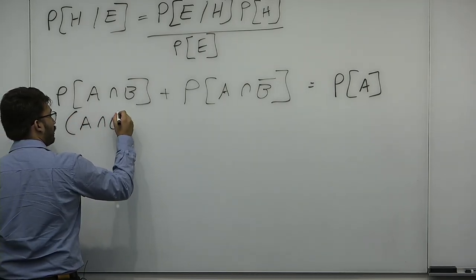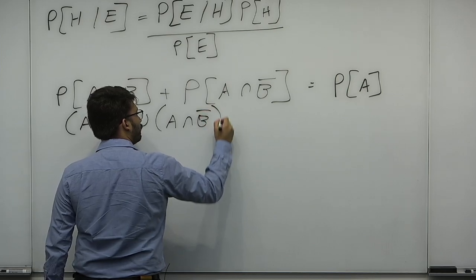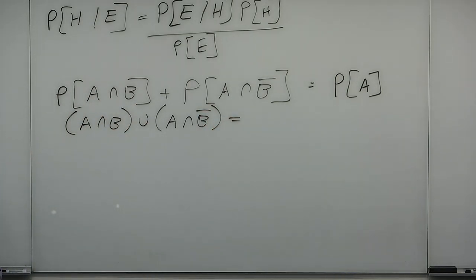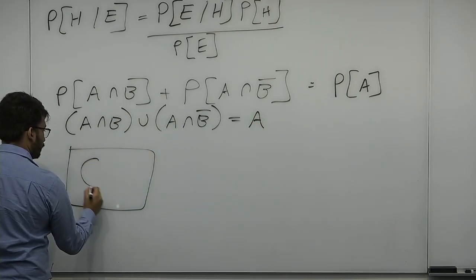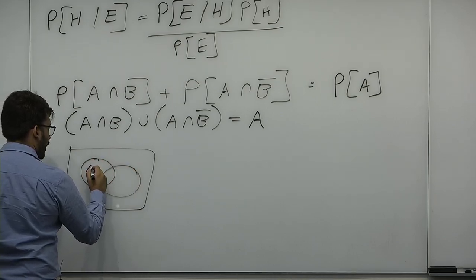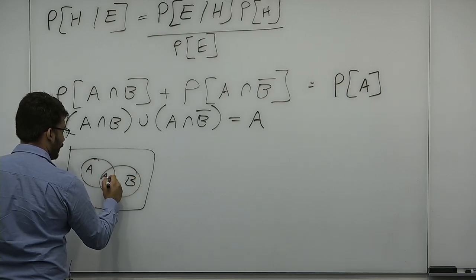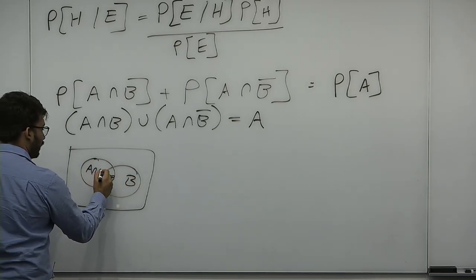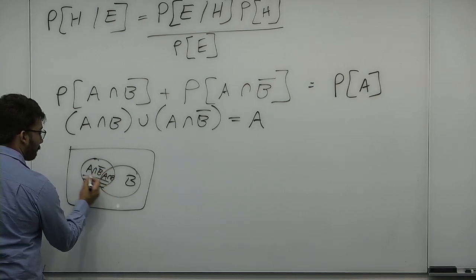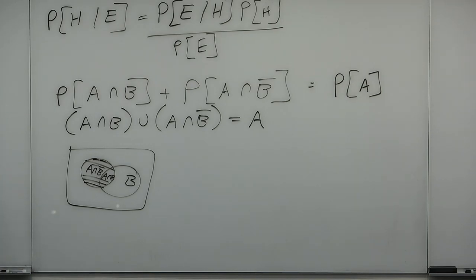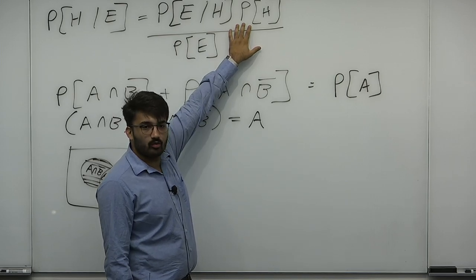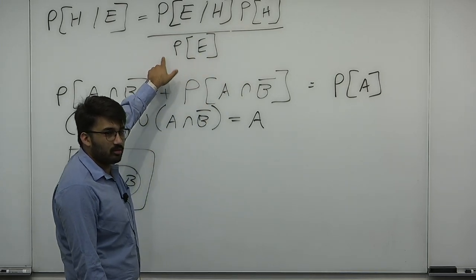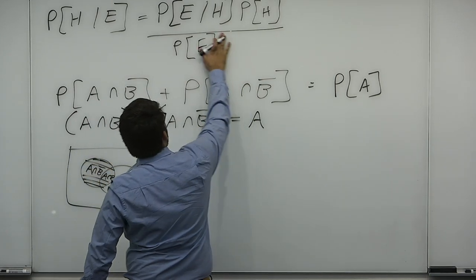Analogously, A intersect B union A intersect B complement — those two sets must be disjoint because B and B complement are disjoint — and this is simply A. It's a partition. The reason I mention this is usually you don't know what the probability of the evidence is. You have some notion of what the probability of the hypothesis is, but usually the probability the evidence occurred is not written unconditionally. So instead, you break this up via the law of total probability.